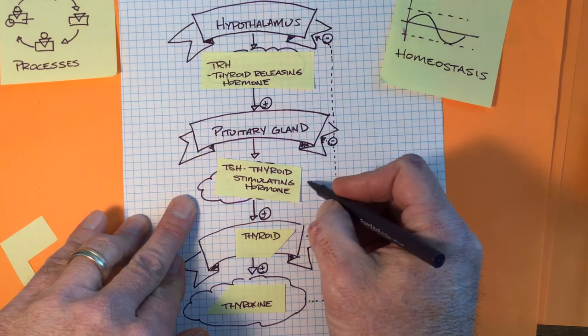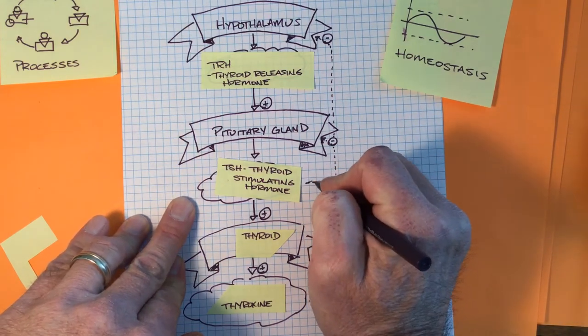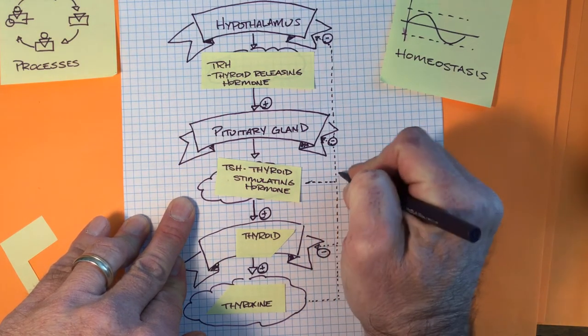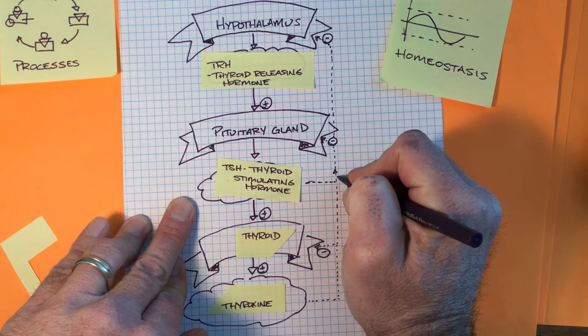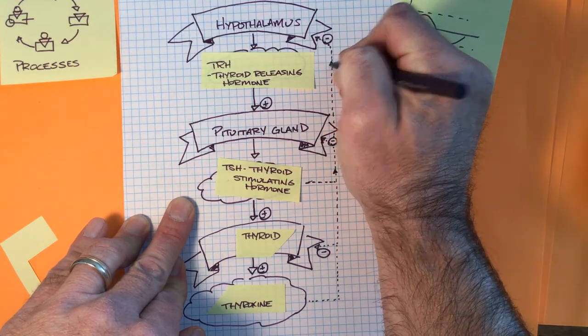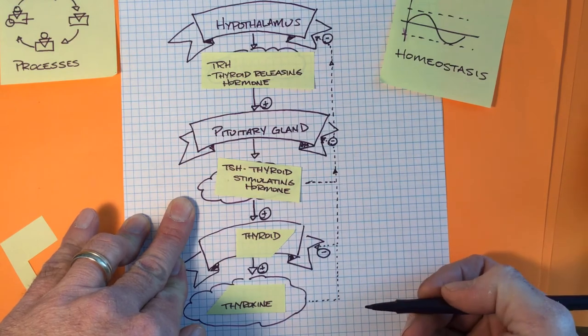So thyroid stimulating hormone also feeds back and moves up here to tell the hypothalamus to not release any TRH.